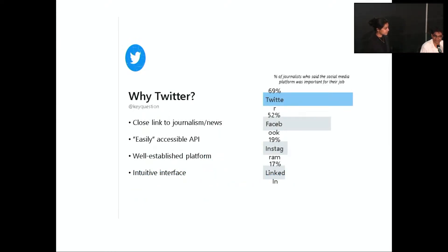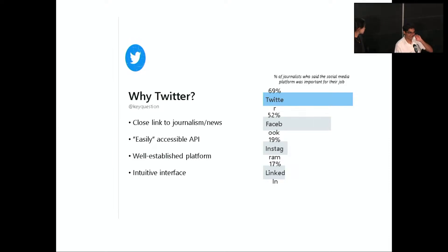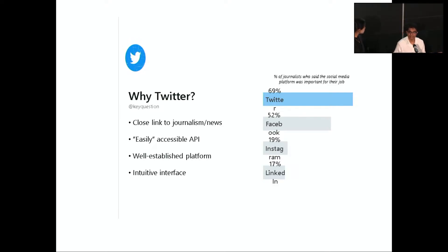The first question we had to tackle was which platform to focus on. We're part of the Brown Institute and Twitter is among the most popular platforms that journalists use — that was a plus for why we chose Twitter. But one of the main reasons we chose Twitter in the end was the accessible API they provided, which allowed us to get pretty much all the information we needed: search queries, platform data, likes, the author, and everything about people who interacted with tweets.